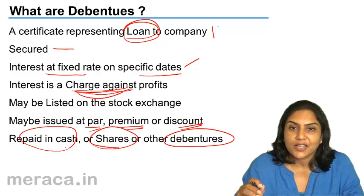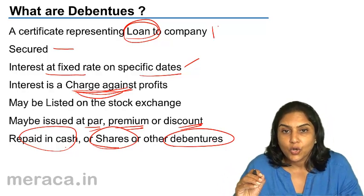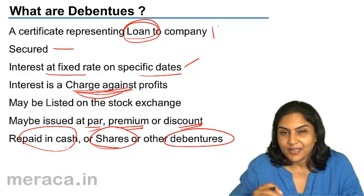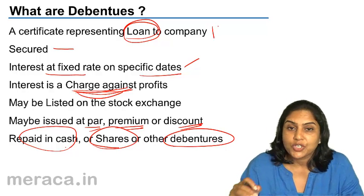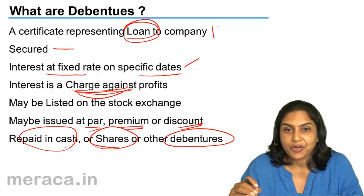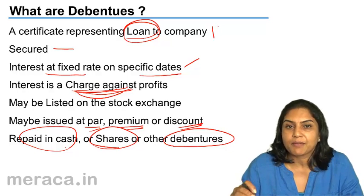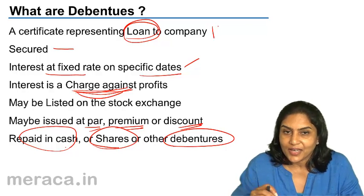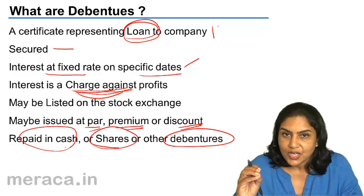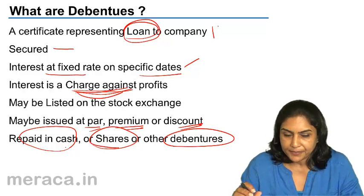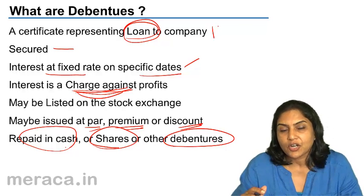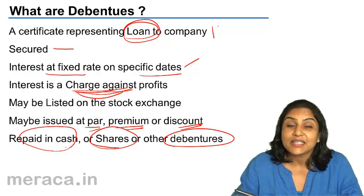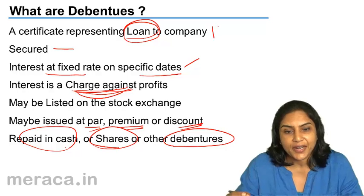So a debenture is nothing but a certificate which represents a loan taken by a company. Debentures are normally secured, and the return on debentures is interest at fixed rates paid on fixed dates every year. The interest payable on debentures is a charge against profits, so whether the company makes profits or losses, interest must be paid. Debentures may be listed on a stock exchange, making them transferable and easily negotiable — we can buy, sell, and trade in debentures.